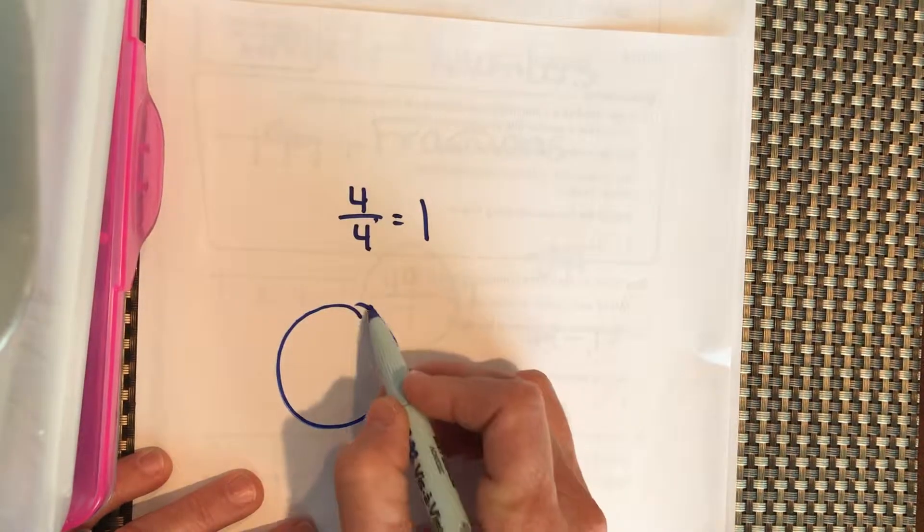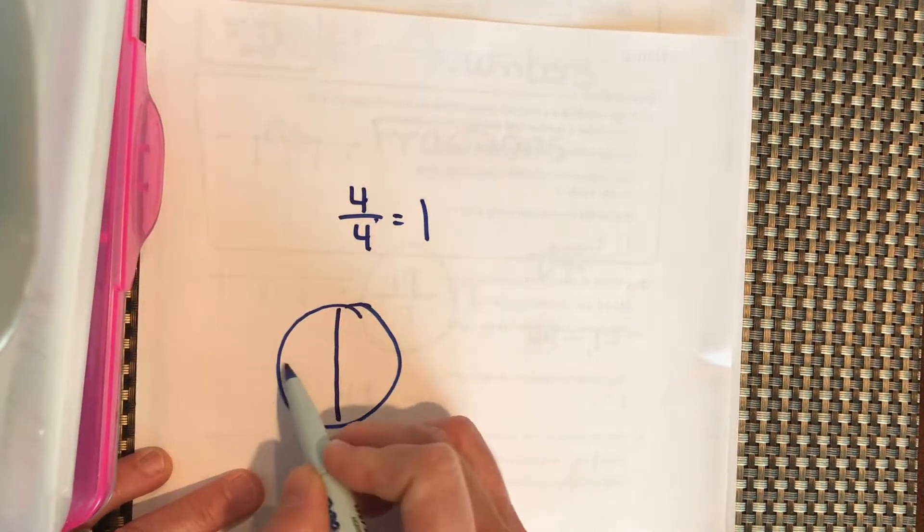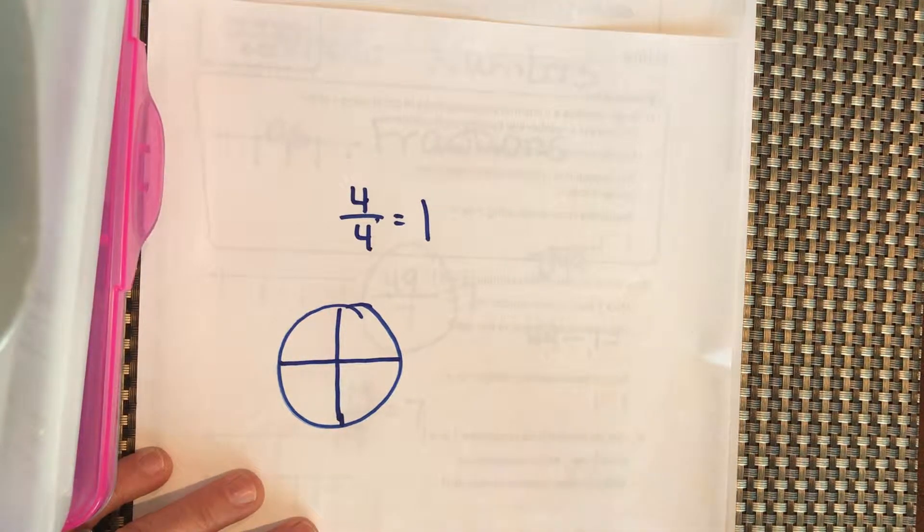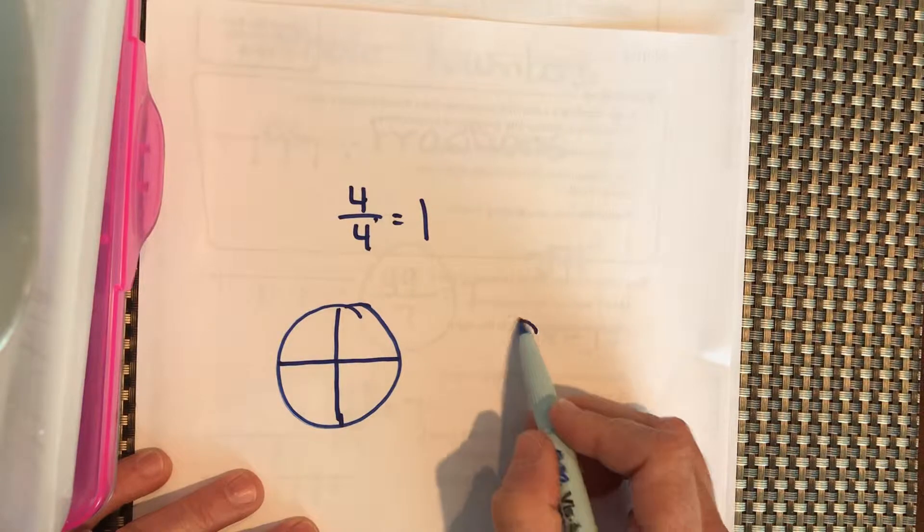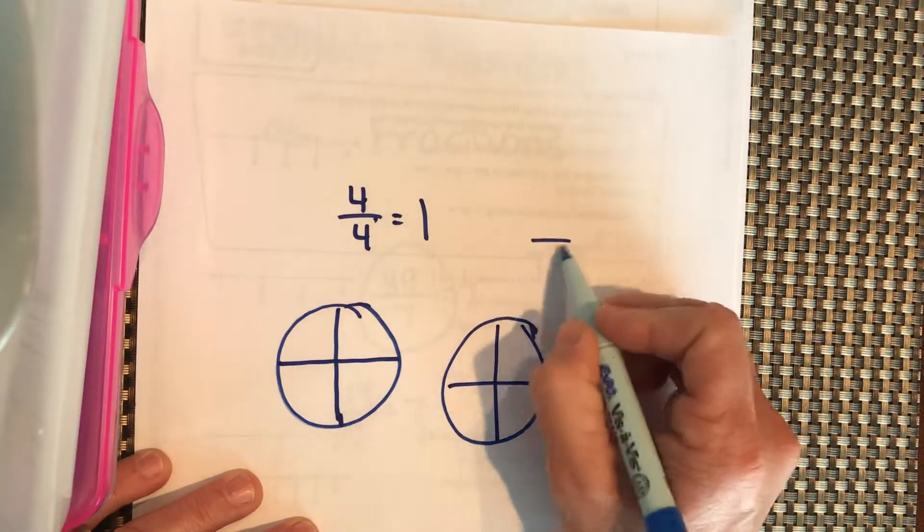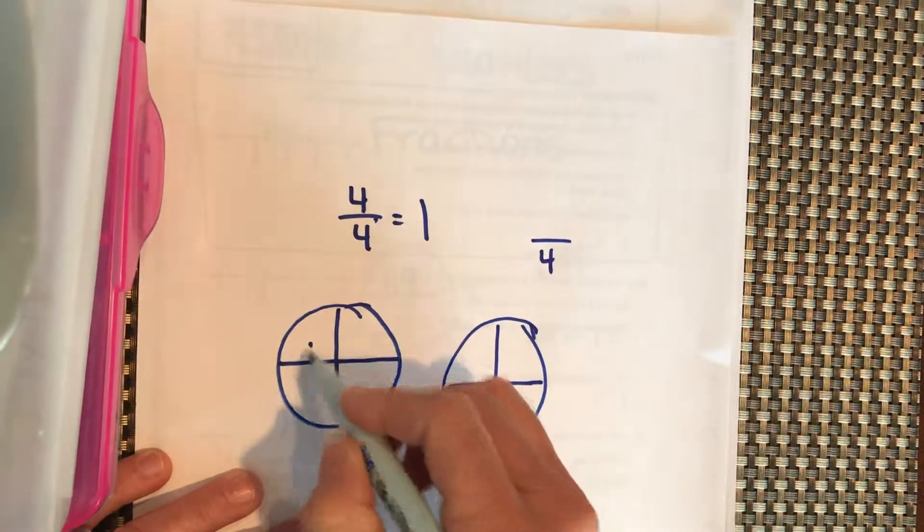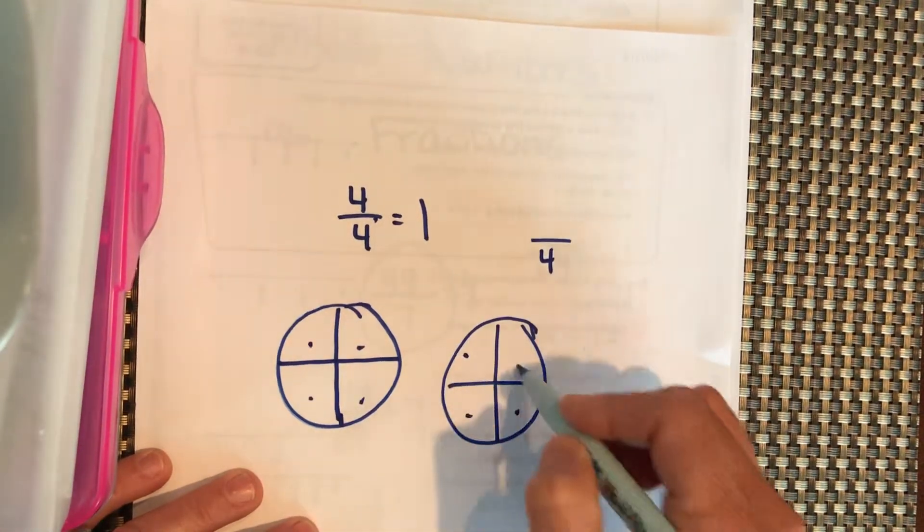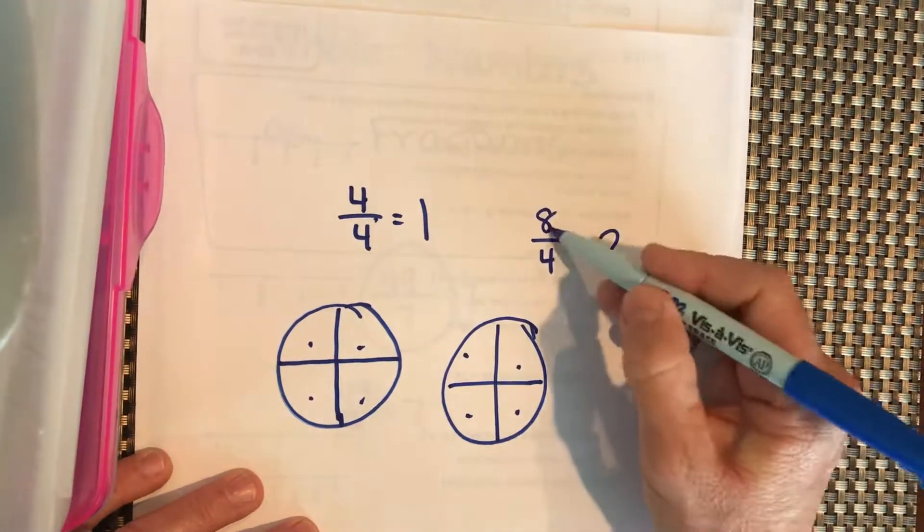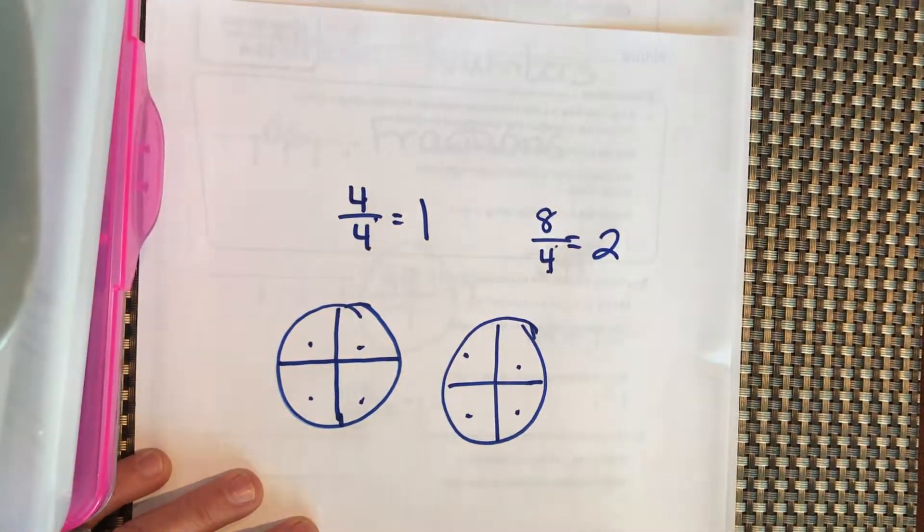So I have 1 pizza divided into 4 equal parts. What if I have 2 pizzas divided into 4 equal parts? I still have 4 equal parts, but I have 1, 2, 3, 4, 5, 6, 7, 8 of them. That equals 2 whole pizzas, and 8 divided by 4 is 2.